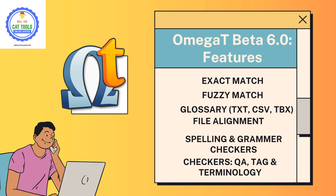We use the file alignment feature when we have separate source and target files and want to build a translation memory from them. Additionally, OmegaT has a spelling and grammar checker that can be customized with additional functionalities. There is also a QA checker, tag checker, and terminology checker. The QA check helps eliminate many errors, the tag check is dedicated to verifying tags, and the terminology checker ensures the correct terminology is used from your glossary, verifying that the right target term is used for each source term.